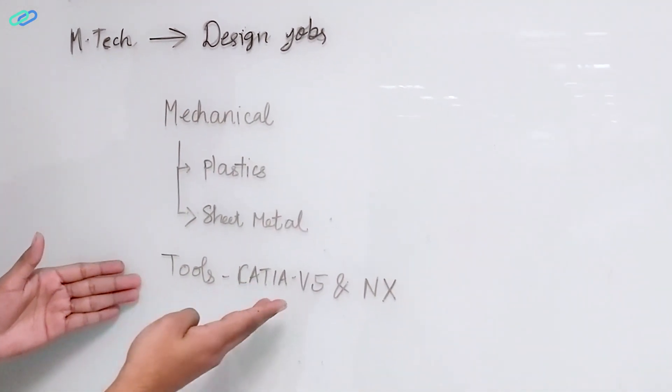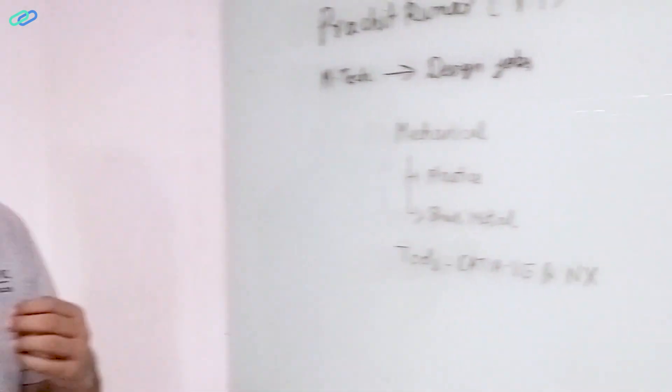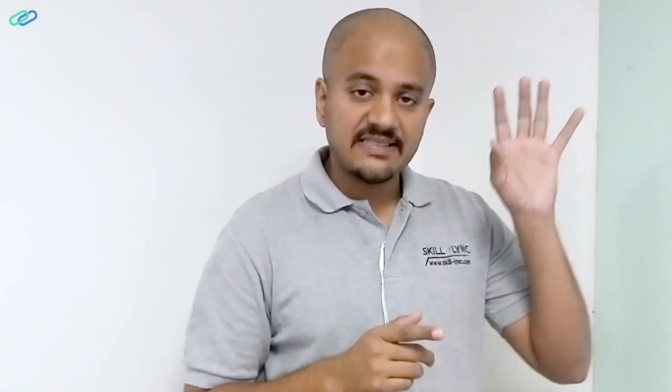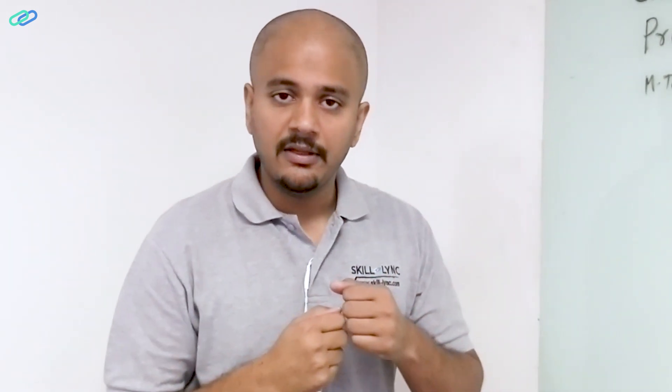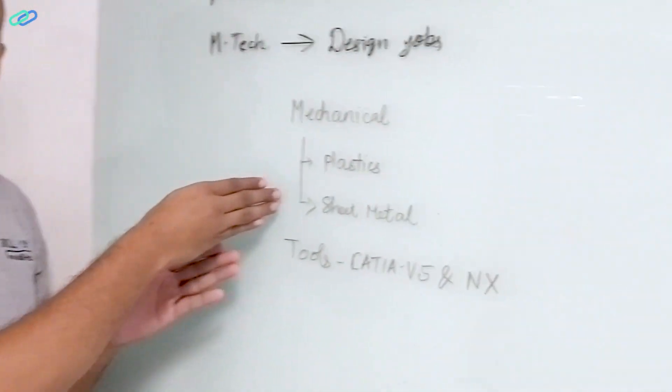So what are the tools that you need to learn? Well, you need to be highly familiar with CATIA V5 and NX. So when I say highly familiar, you need to have previously designed plastics and sheet metal components. And here is where there is a gap. In your university, you are learning CATIA V5, but you are just learning the tools. You know how to press the button, you know how to extrude, you know how to create a ruled surface, but you don't know how to create a plastic component. You don't know how to design a BIW component. And that skill is what is required.